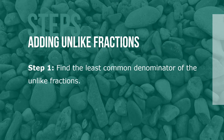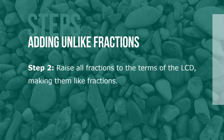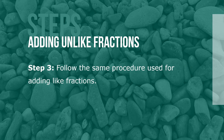Here are the steps for adding unlike fractions. Step 1, find the least common denominator of the unlike fractions. Step 2, raise all the fractions to the terms of the LCD, making them like fractions. Step 3, follow the same procedure used for adding like fractions.